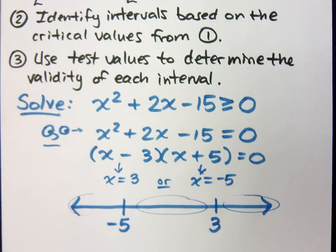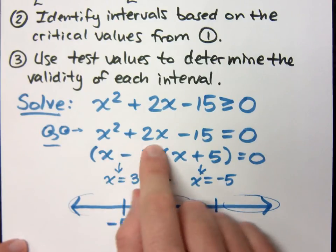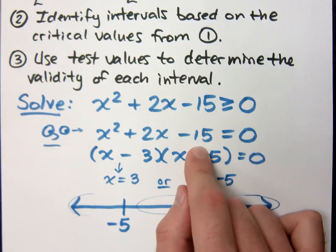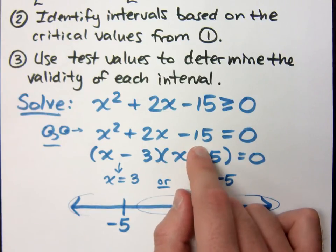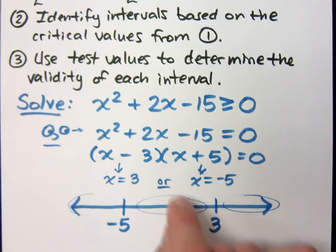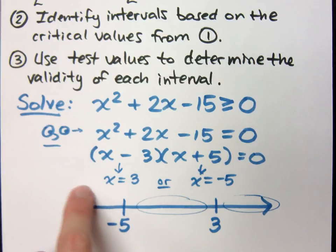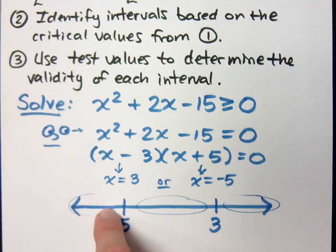So in these intervals, I'm going to do test values. Here's the thing. This is a polynomial expression. He cannot go from having to returning positive values to all of a sudden returning negative values unless he hits the zero, unless he hits the gatekeeper, which means any number that I plug in that's in this interval, these guys will all return the exact same sign, either all positive or all negative.